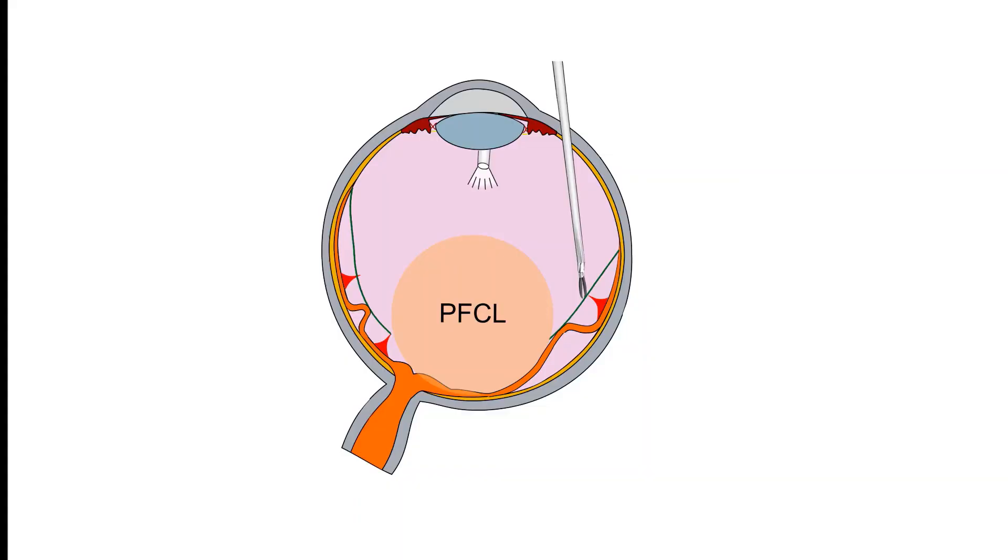PFCL can be useful while handling mobile retina. It helps to keep the blood off the macular region, stabilize the retina during membrane dissection, and also aids to drain the subretinal blood through peripheral breaks.